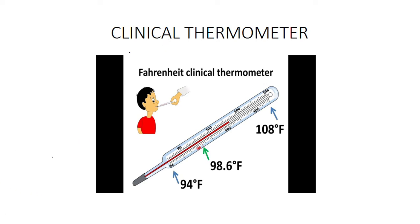In this presentation, we will learn about clinical thermometer. A clinical thermometer is used to measure the temperature of a human body and is therefore used at home, in clinics, and at hospitals. It is generally called a Fahrenheit clinical thermometer because temperature of the human body is expressed in Fahrenheit scale, as it provides more sensitivity compared to Celsius.